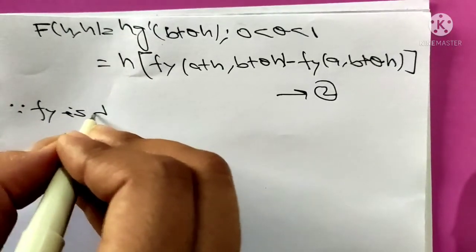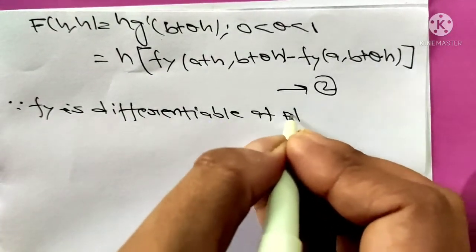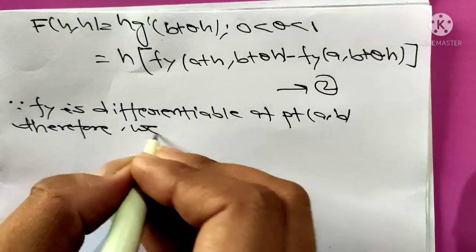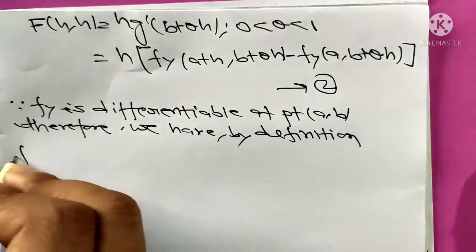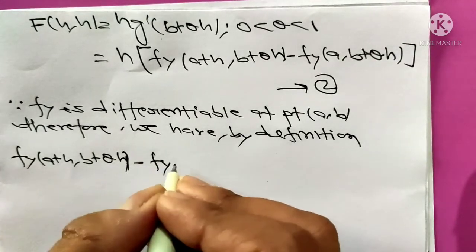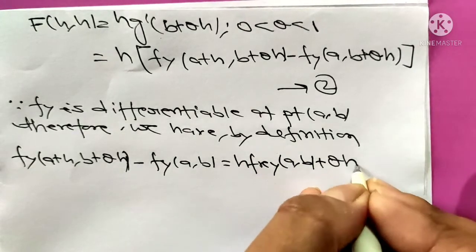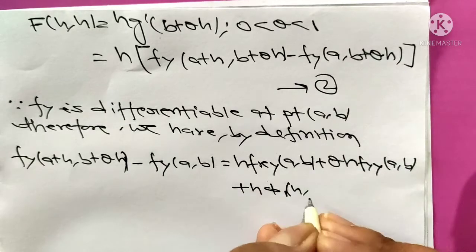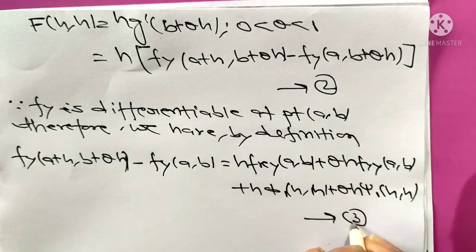Since fy is differentiable at point ab, therefore by definition of differentiability we can write fy(a+h, b+θh) minus fy(a, b+θh) equals h times fxy(a,b) plus h times φ1(h,h) plus θh times ψ1(h,h). Give it equation 3.